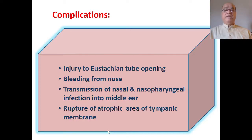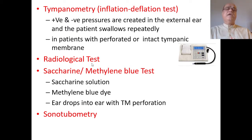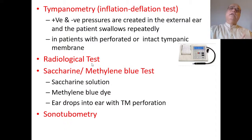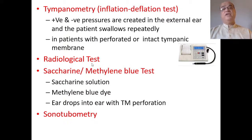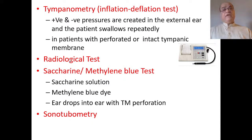Audiological investigations include tympanometry, which will be discussed in detail in another video. In tympanometry, a difference of air pressure is created in the external ear and the middle ear on both sides of the tympanic membrane, and a tympanogram (graphic presentation) is produced. If there is fluid in the middle ear, a Type B flat graph is obtained; if there is negative pressure only, a Type C graph shifted to the negative side is obtained.